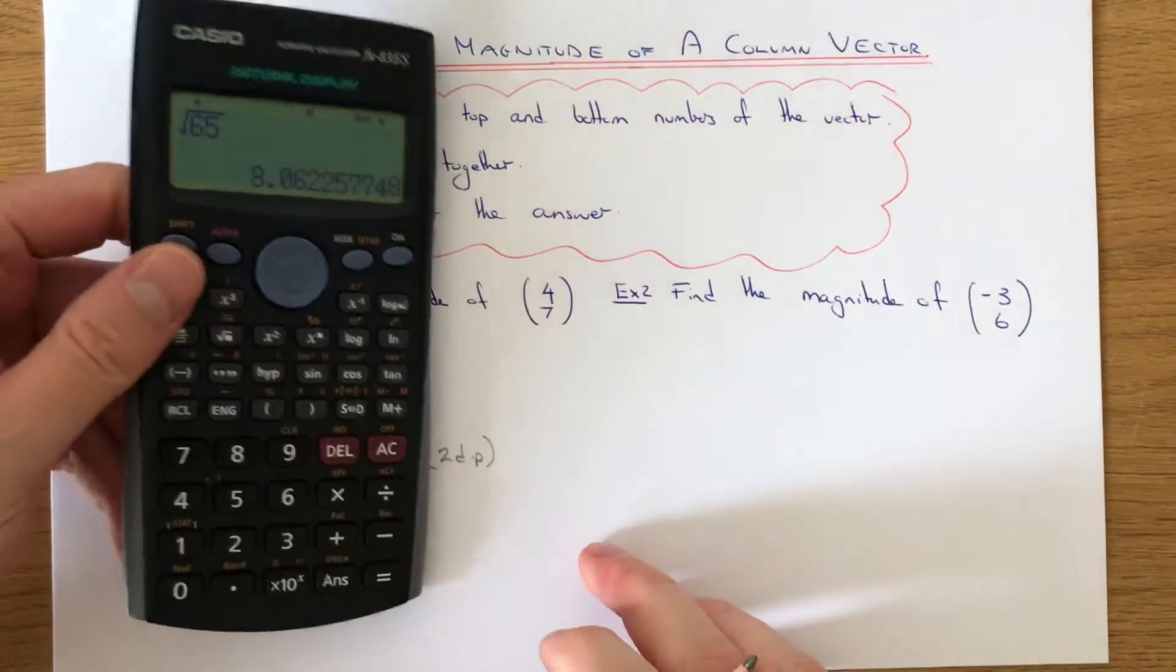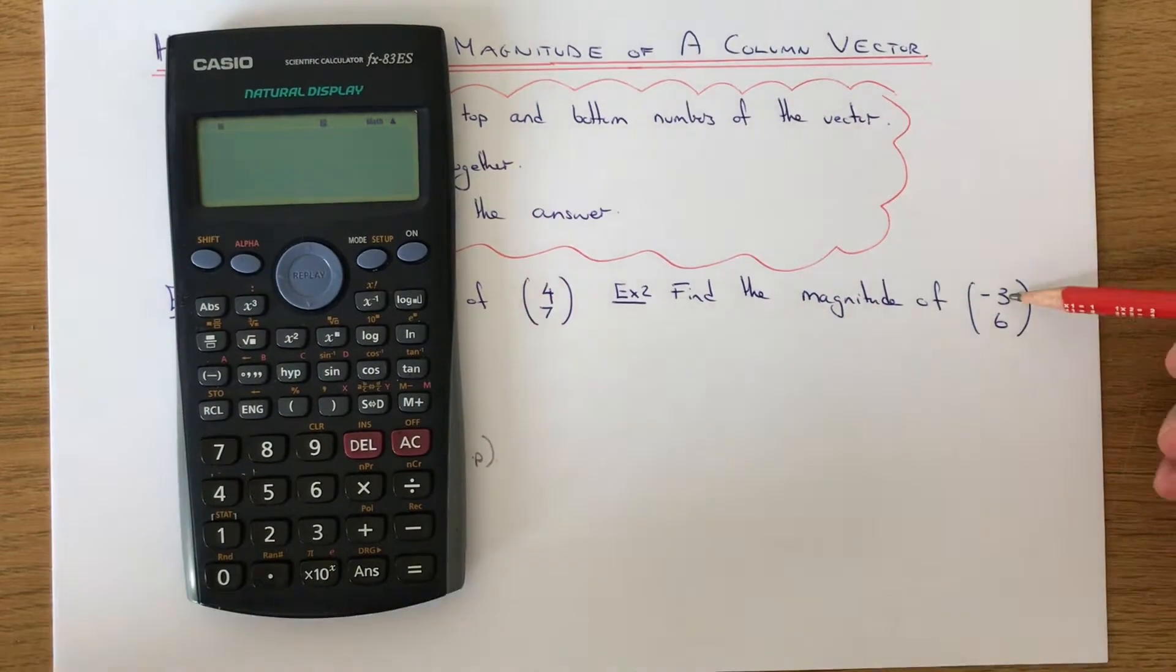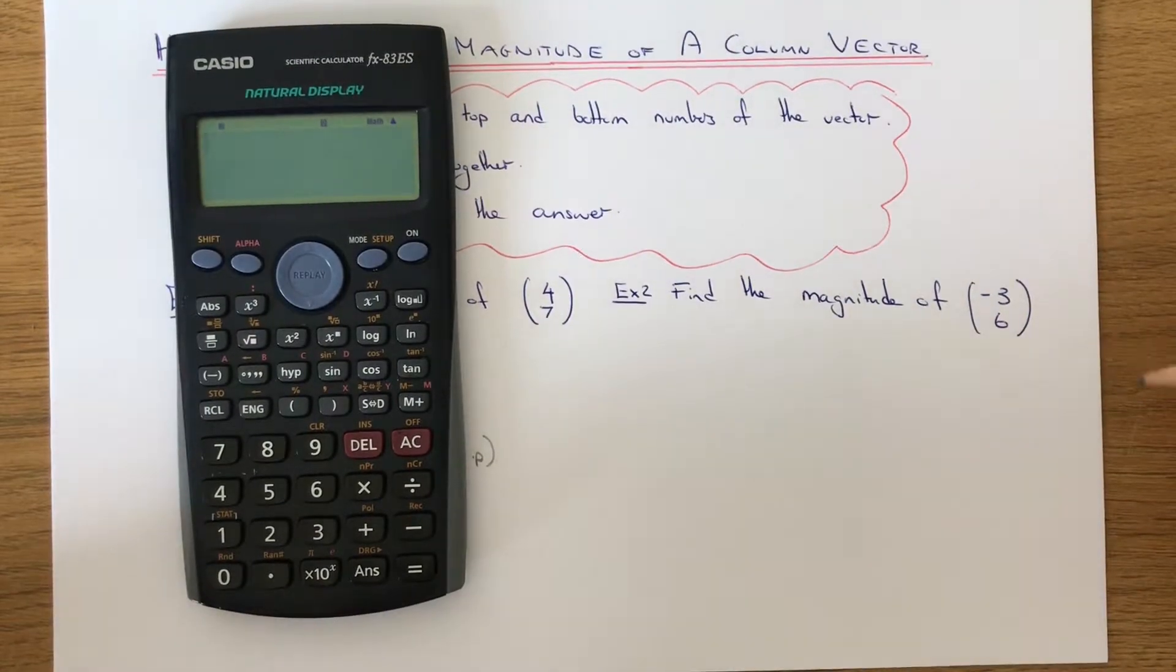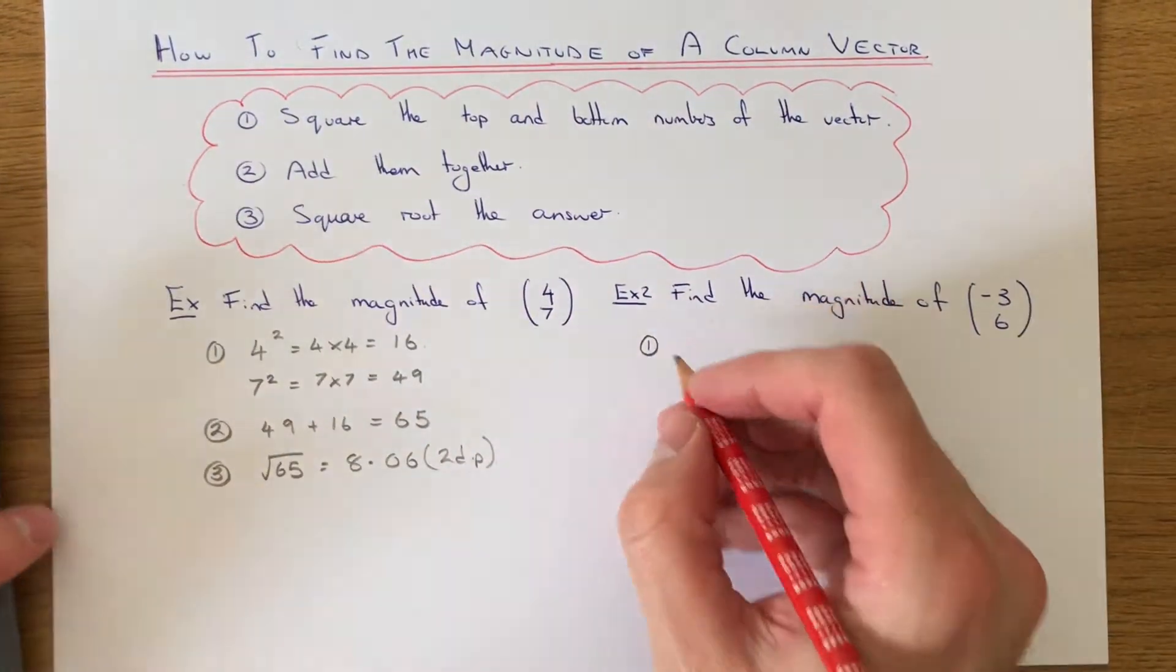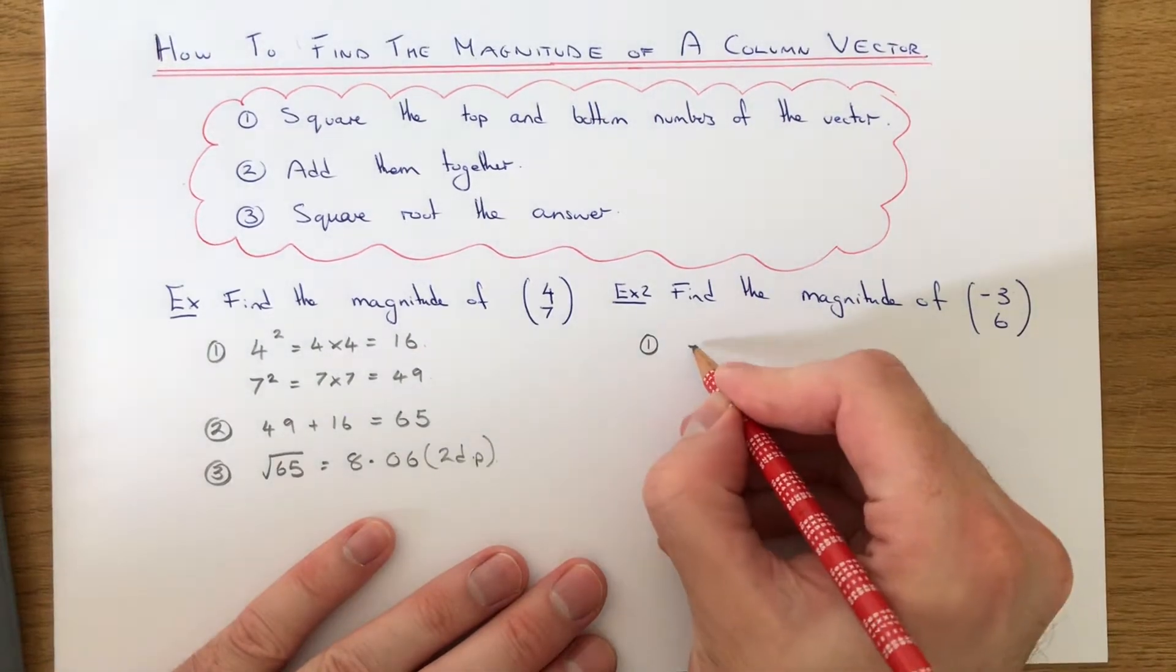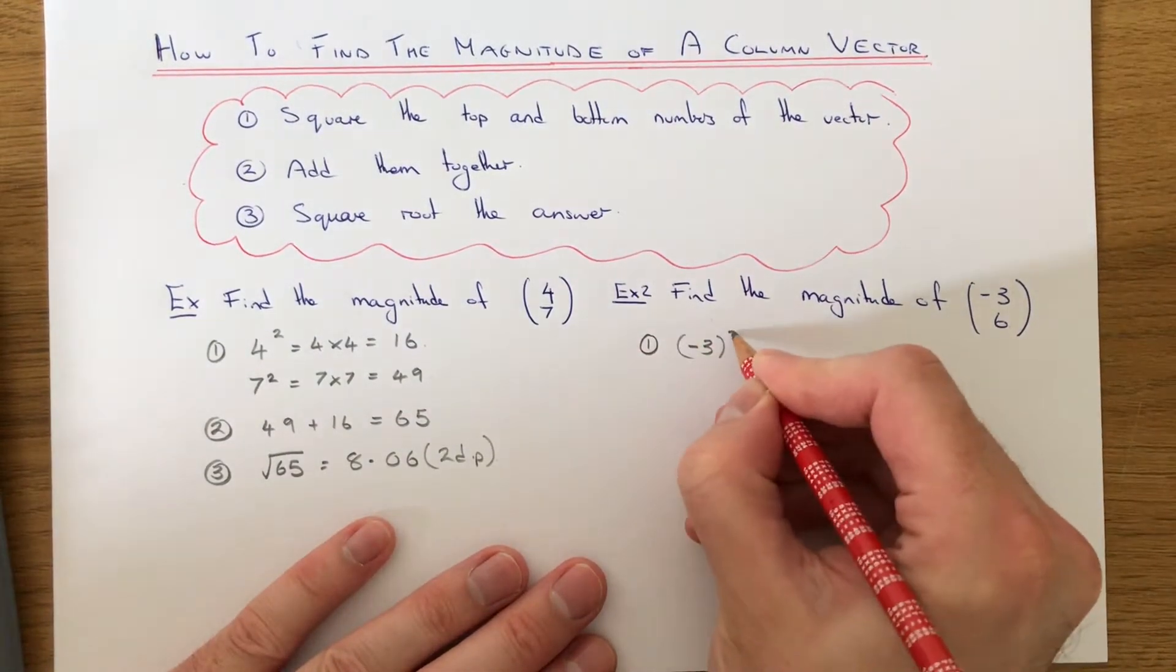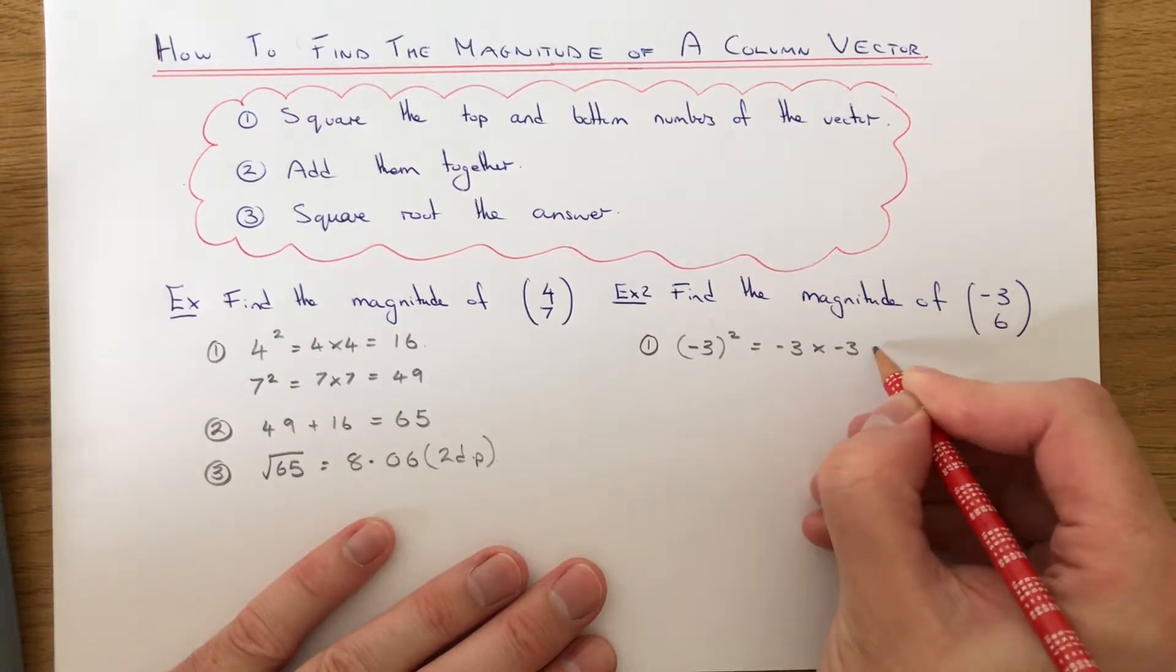Let's move on to example 2. This one's a little bit harder because we've got a negative number in the vector. Step 1: we need to square the numbers on the top and bottom of the vector. First, minus 3 squared is minus 3 times minus 3.